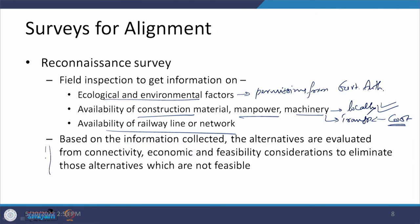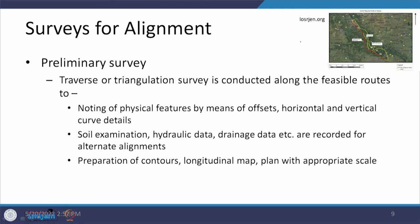That decision needs to consider not only the A-to-B connectivity but also obligatory and non-obligatory points, and the economics of construction, operation, and maintenance. Once feasibility is assessed and eliminations are made, we are left with only those alternatives that can be taken forward. With 1, 2, or 3 alternatives remaining — as shown in yellow or red here — the next thing is to collect more detailed information along these alignments, and that is where the preliminary survey comes into picture.